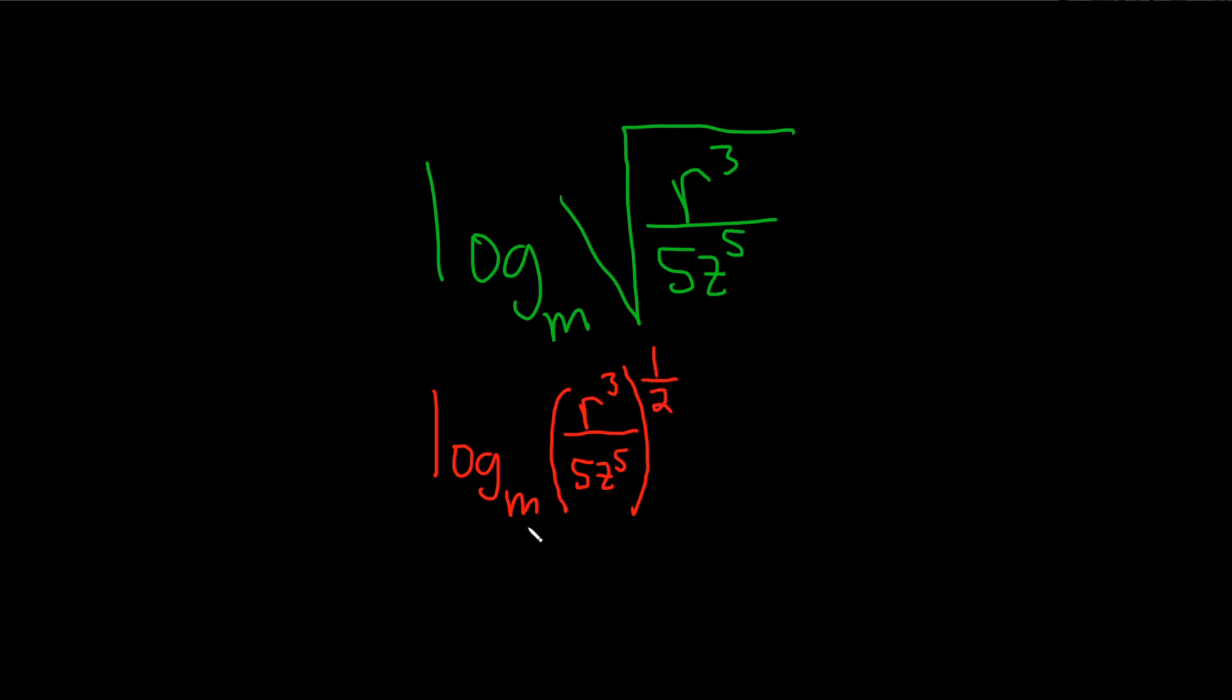Okay, before we use any of the rules though for logs, we have to get rid of this one-half. If you think about the log rules, like for example the quotient rule, it says if you have the log base b of x over y, you subtract. You do log base b of the top minus log base b of the bottom. But notice there's a one here, there's not a number.